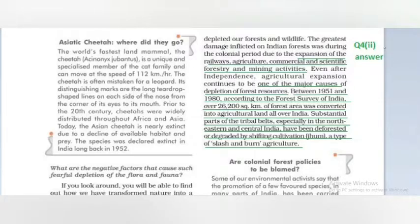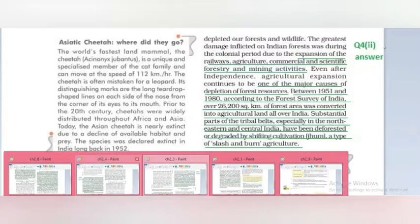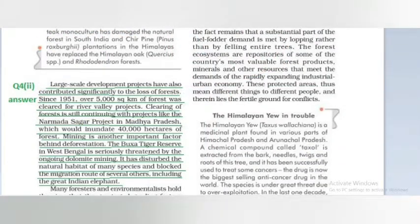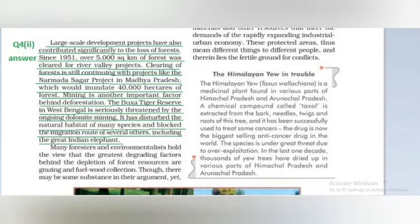Activities like expansion of railways, agriculture, commercial and scientific forestry, and mining — these are examples we can give. Large-scale development projects are also responsible for the loss of forest, flora and fauna. We will put examples such as forest loss, mining, and grazing and fuel wood collection.